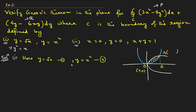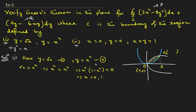Since both left-hand sides equal y, we set √x = x². Squaring both sides: x = x⁴, so x²(1−x²)=0, giving x=0 and x=1. Substituting back, y=0 and y=1. So the coordinate of A is (1,1) and B is (1,0). We travel from O to A along one parabola and return from A to O along the other to cover the closed curve.